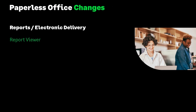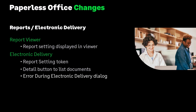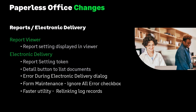For Paperless Office users, several enhancements were made to the reports and electronic delivery tasks. In the Report Viewer, the report settings used for printing will now be displayed in the viewer so you can easily identify reports without having to open individual PDFs. Electronic Delivery Message Maintenance has a report setting token available that can be included in the subject line and the body of the email. Electronic delivery enhancements include a Detail button to display a list of documents included. The Error During Electronic Delivery dialog will now be resizable for easier reading. Also, a one-click Copy to Clipboard button can be found in the Error During Electronic Delivery dialog box, saving at least two steps. In Form Maintenance, an Ignore All Errors checkbox allows you to set the default for this option in Error During Electronic Delivery. Additionally, a faster utility for relinking Paperless Office log records was added to the Sage 100 Utilities screen, which you access by entering *UTL in the file run prompt. In Viewer tasks, the log record you've selected in the list box now persists after clicking a button on the sidebar.